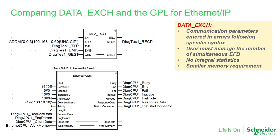The data exchange function block does not include integrated statistics such as the number of successful or erroneous messages, or average communication time. The PLC programmer would need to add logic to calculate these statistics from communication reports, error codes, the activity bit, or transaction numbers. One advantage, however, is a much smaller memory requirement compared to the GPL implementation.